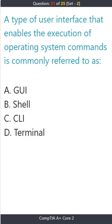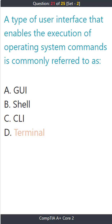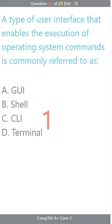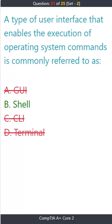Question 21. A type of user interface that enables the execution of operating system commands is commonly referred to as: A) GUI, B) shell, C) CLI, D) terminal. The correct answer is B) shell.